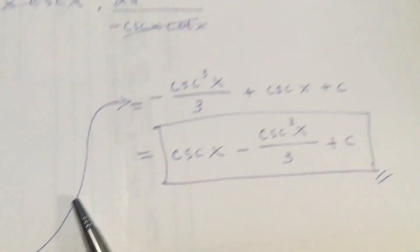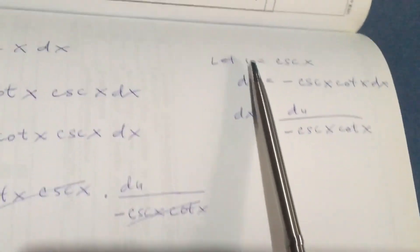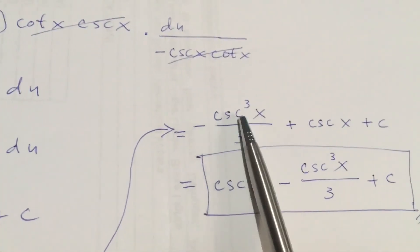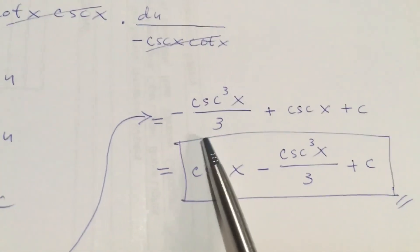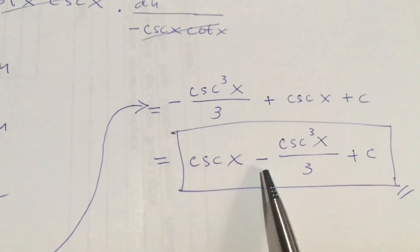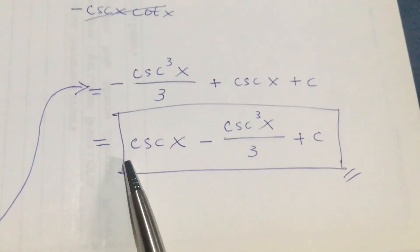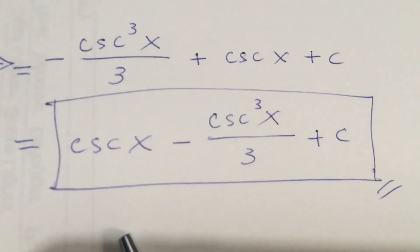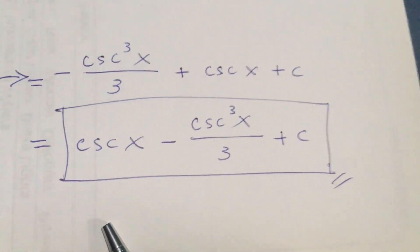Don't forget to write the plus C — that's important for indefinite integrals. Now substitute back cosecant x for u. The result is negative cosecant³(x) over 3 plus cosecant x plus C. Rearranging so the negative is inside: cosecant x minus cosecant³(x) over 3 plus C. This is the final answer.